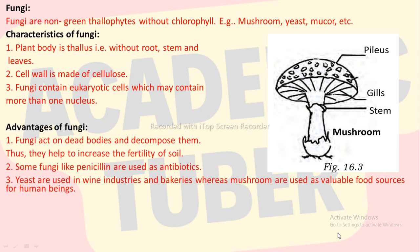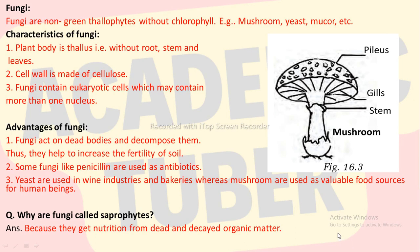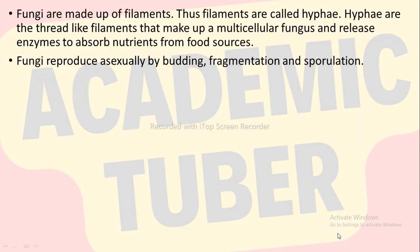Advantages of fungi. Fungi act on dead bodies and decompose them, thus they help to increase the fertility of soil. Some fungi like penicillin are used as antibiotics. Yeasts are used in wine industries and bakeries, whereas mushrooms are used as valuable food sources for human beings. Fungi are made up of filaments and these filaments are called hyphae. Hyphae are the thread-like filaments that make up a multicellular fungus and release enzymes to absorb nutrients from food sources.